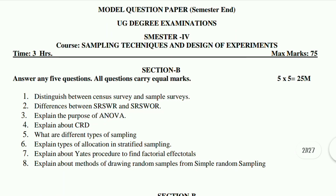This is the model question paper for Course 4. Short questions: First, distinguish between census survey and sample survey. Second, differences between SRSWR and SRSWOR. Third, explain the purpose of ANOVA. Fourth, explain about CRD. Fifth, what are the different types of samplings? Sixth, explain types of allocations in stratified sampling. Seventh, explain the procedure to find factorial effect totals. Eighth, explain methods of drawing random samples from simple random sampling.